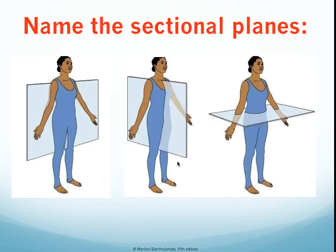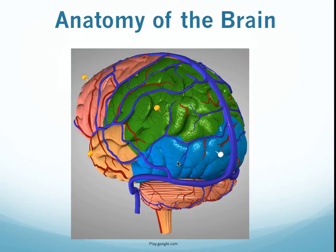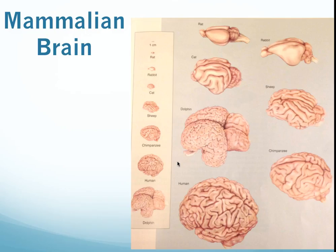Quick quiz — name those sectional planes. Alright, the answer: coronal, mid-sagittal, and horizontal. So let's get on to the actual anatomy of the brain. We've talked a bit about directional terms and sectional anatomy — now we're going to talk about what the brain is actually made of.